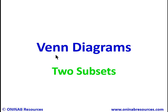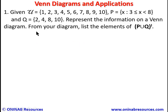Hello, welcome to this tutorial on Venn diagrams. We'll be looking at two subsets given a universal set. The first problem gives the universal set as {1, 2, 3, 4, 5, 6, 7, 8, 9, 10}, P is the set of X such that 3 ≤ X < 8, and Q is the set {2, 4, 8, 10}. Represent the information on a Venn diagram.